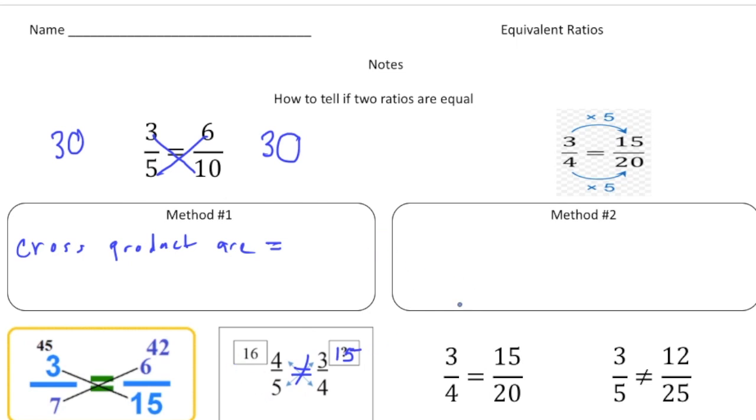Method number two is just like I showed you on the first page of the notes, where you multiply both the numerator and denominator by a common factor. So let's just write down CF for common factor. So three times five is fifteen. And four times five is twenty. So both the three and the four were multiplied by a common factor of five.